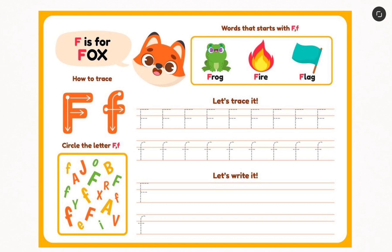Now like you know, among the English alphabet we have A, B, C, D, E, F. F is the sixth letter in the English alphabet. F can stand for a lot of words like F for Fox, Frog, Fire, or Flag.